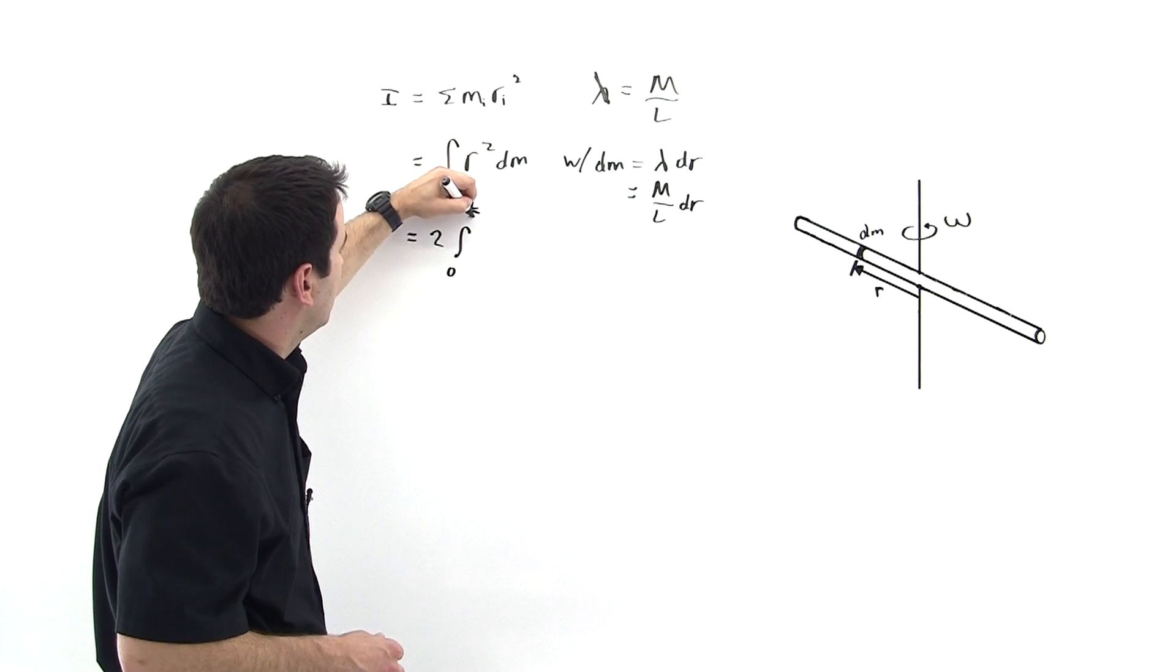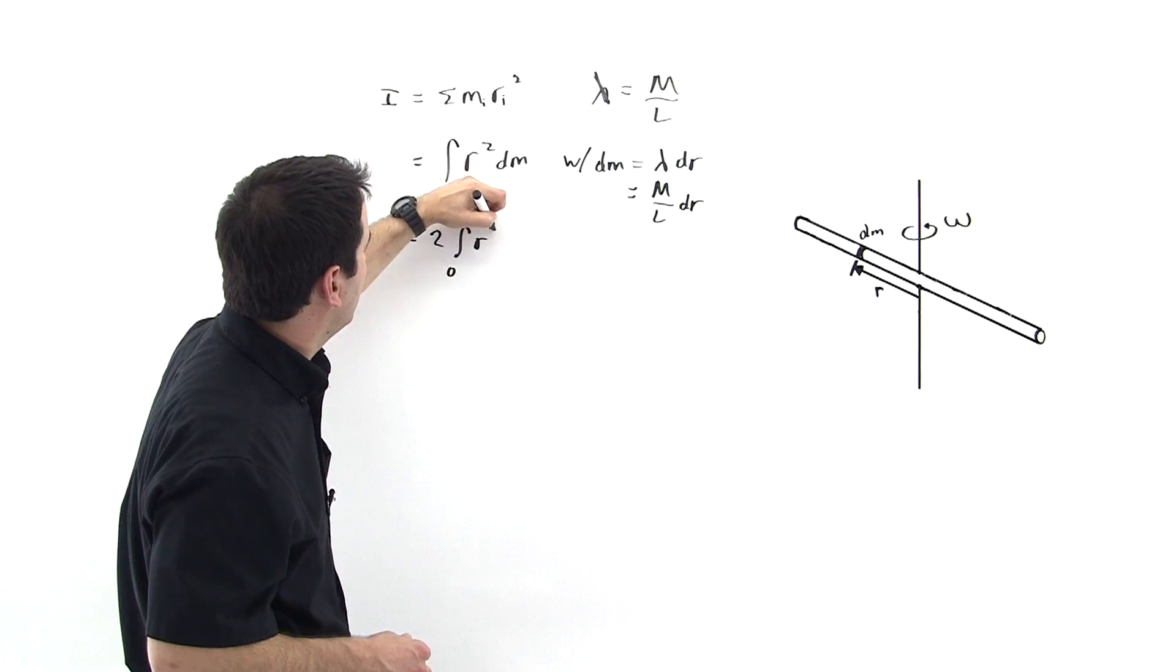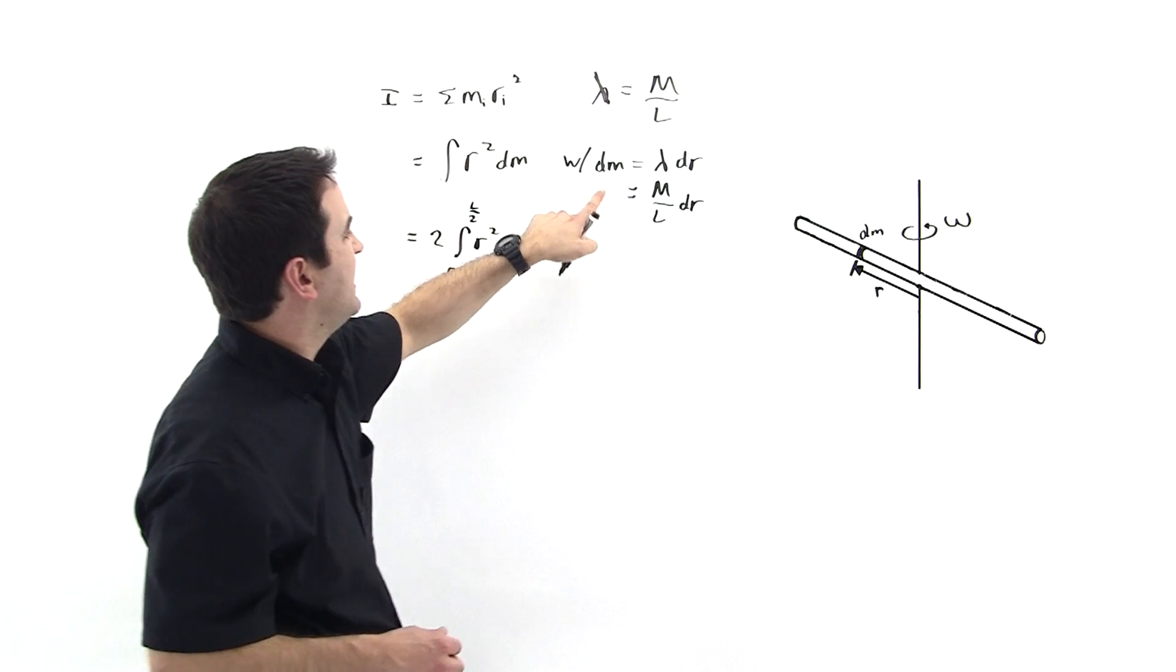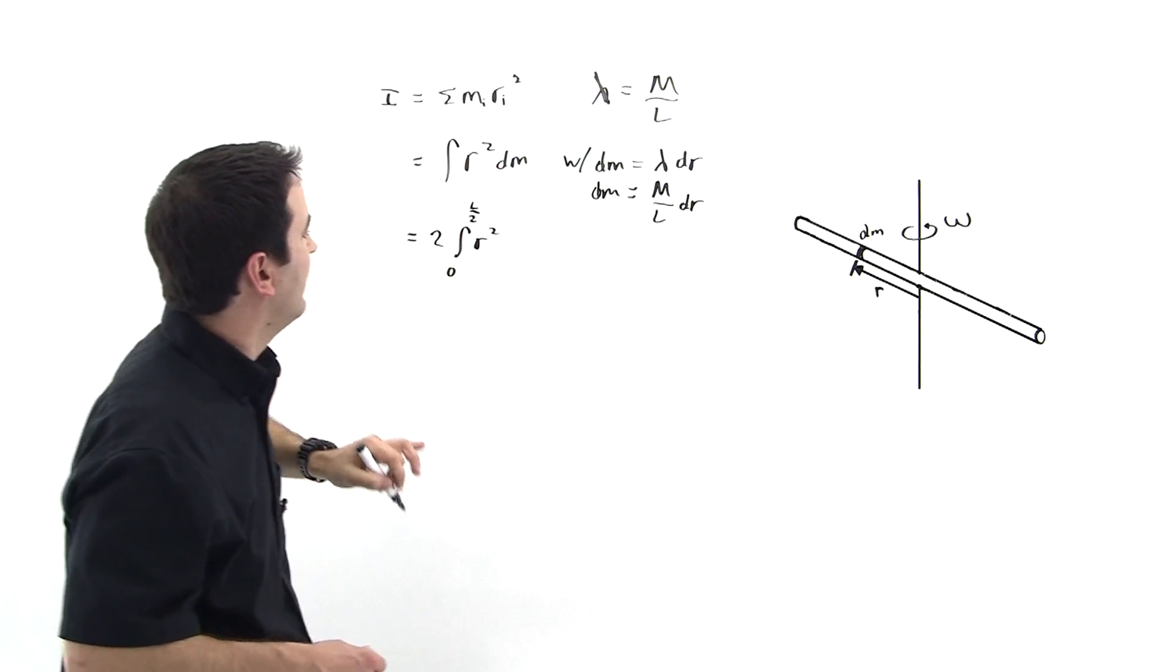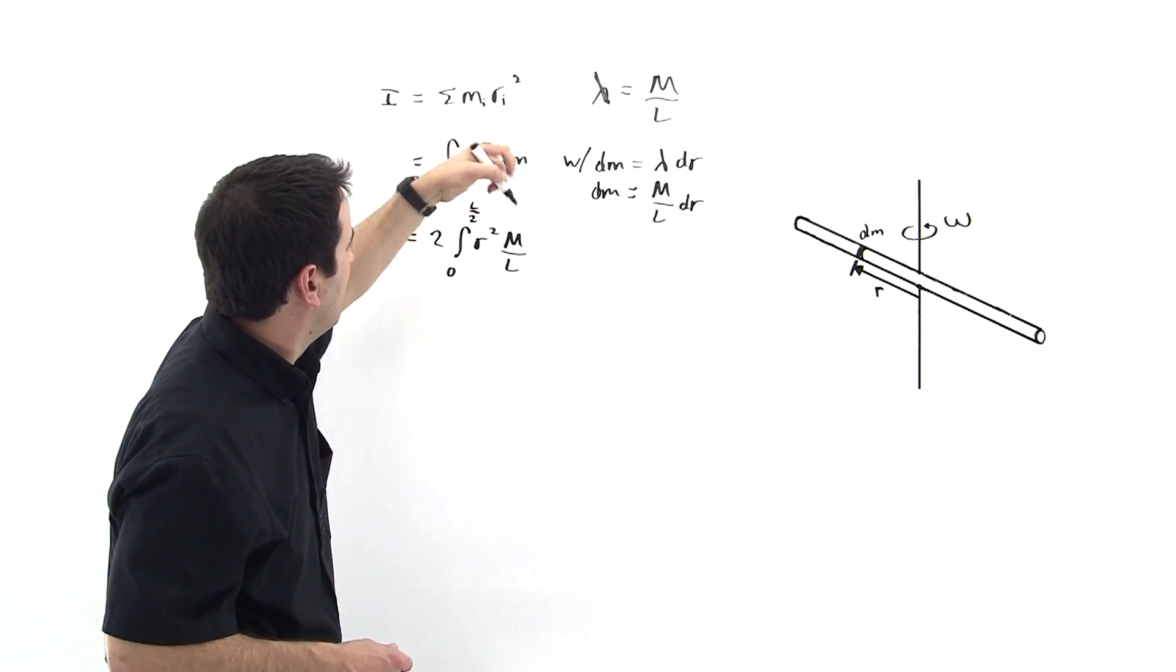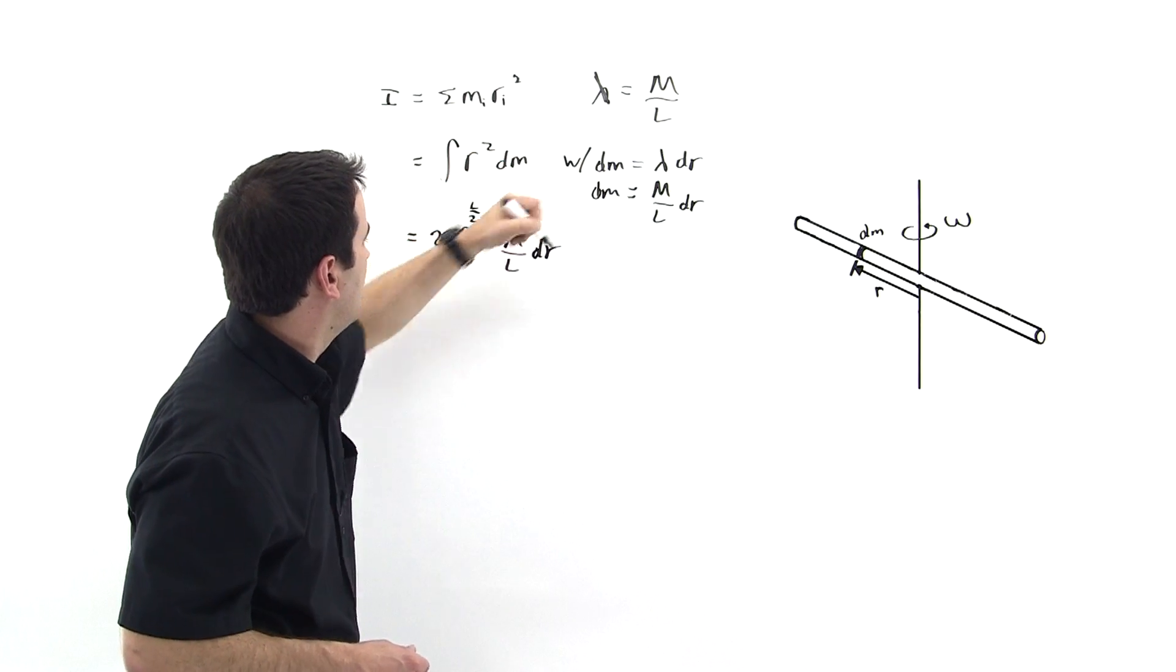r squared, dm. But now we have dm in terms of dr. So I'll just re-read dm right there. So m over l times dr, like so.